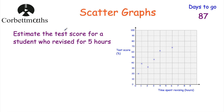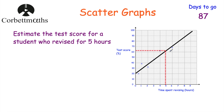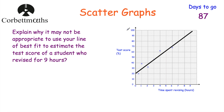The question asks: estimate the test score for a student who revised for five hours. We draw a line of best fit as close to the points as possible. Going to five hours on the x-axis, up to the line of best fit, then across — noting each small box is worth 2 (since 10 ÷ 5 = 2) — we get 62%. So our estimate for a student who revised for five hours is 62%.